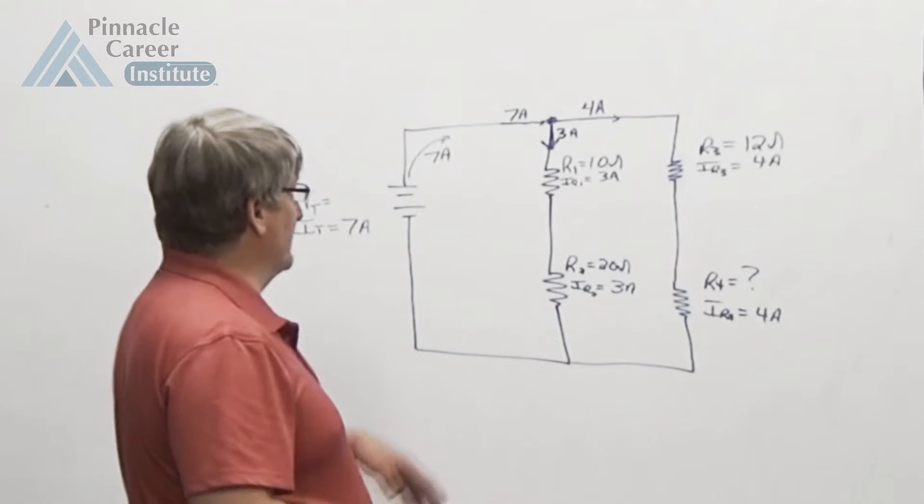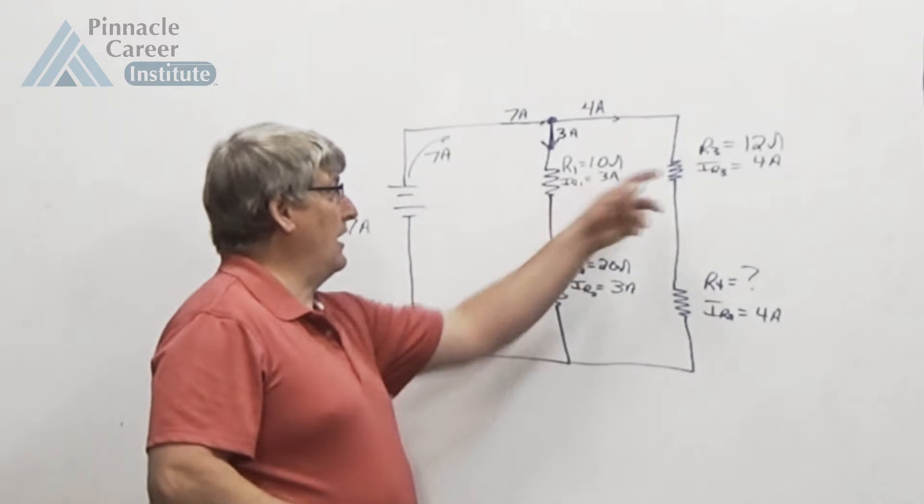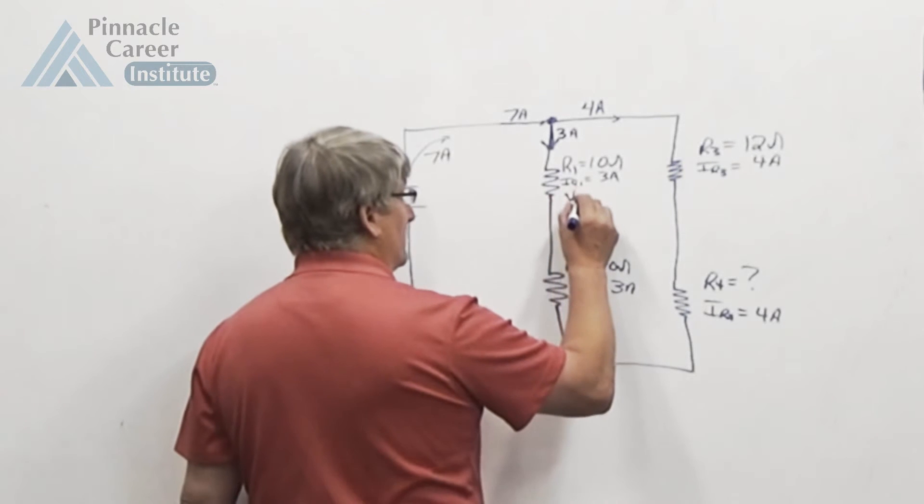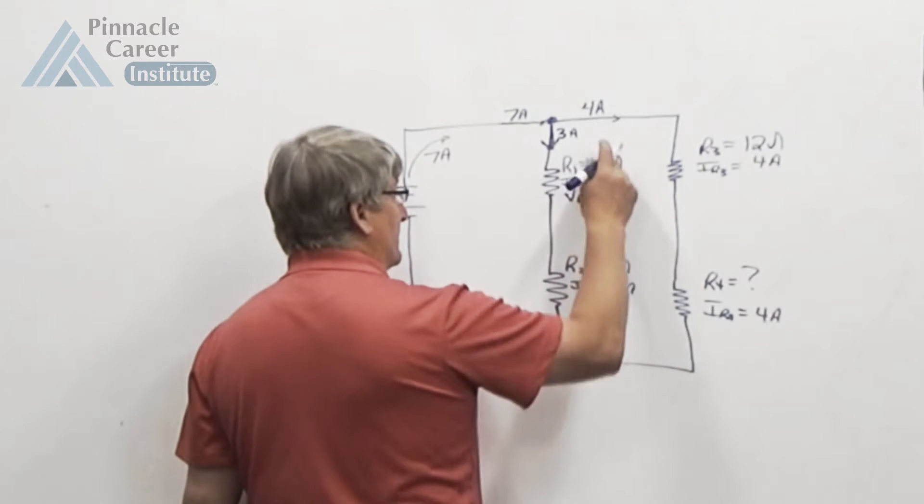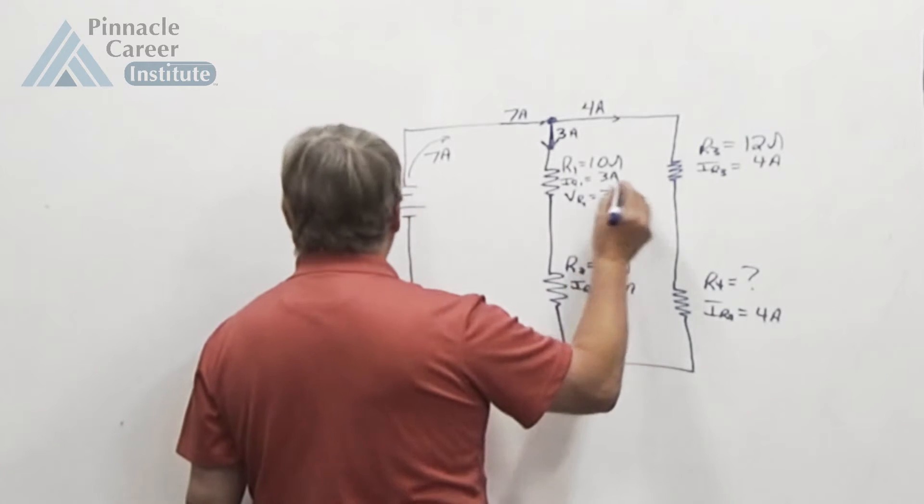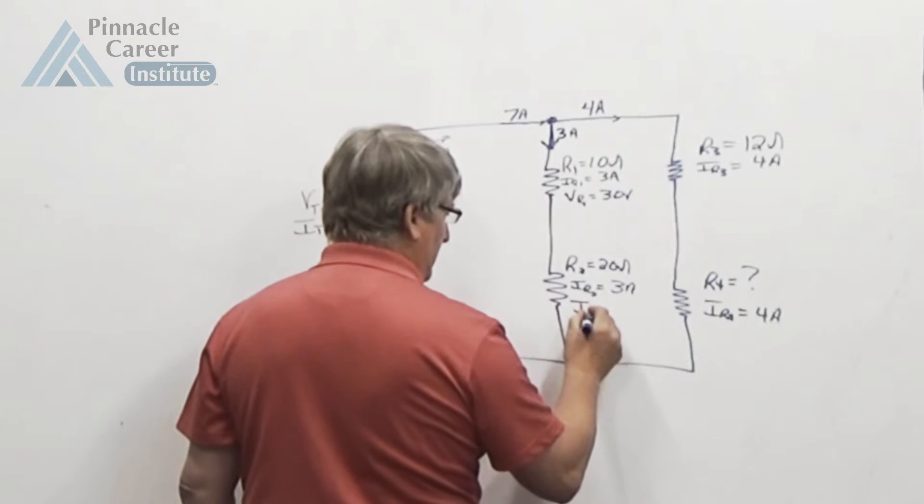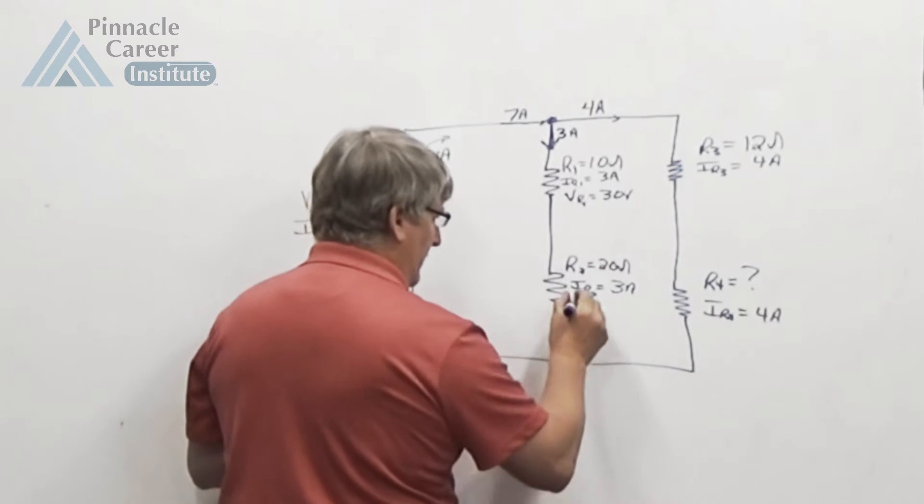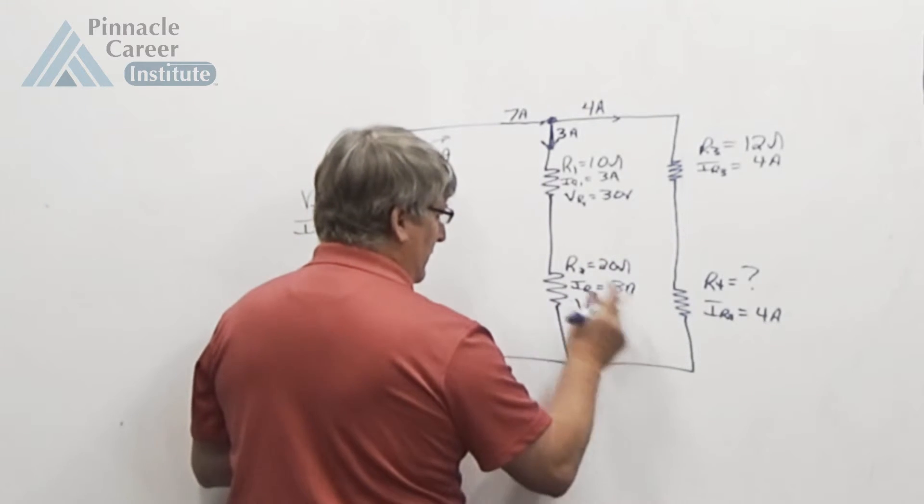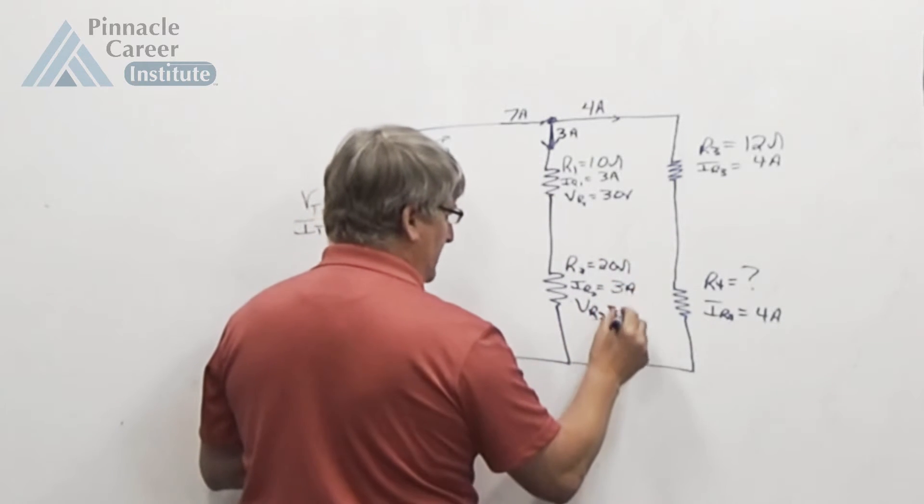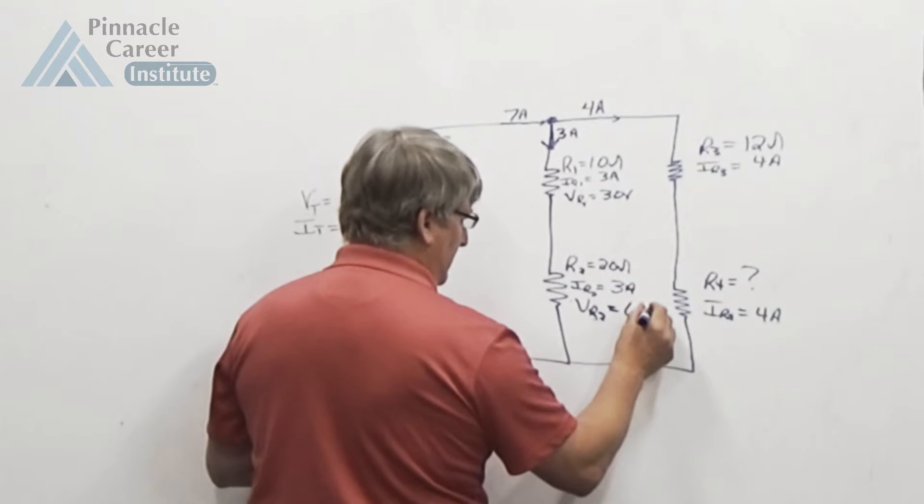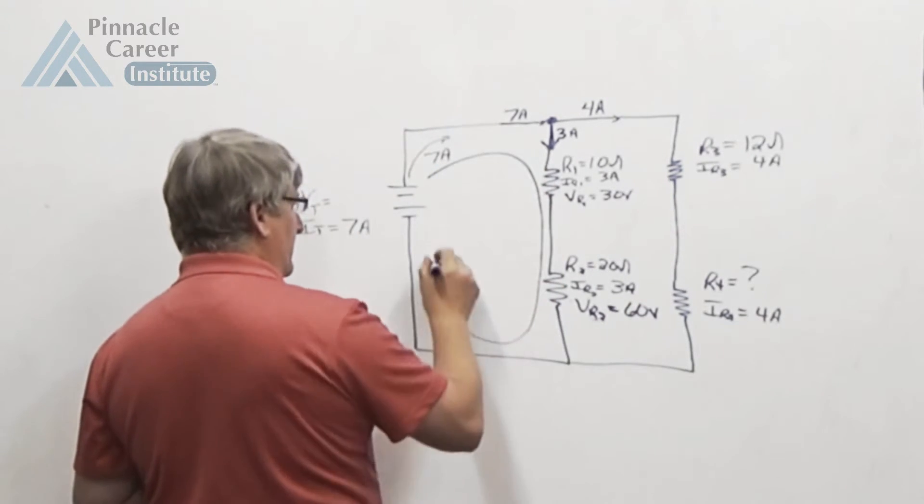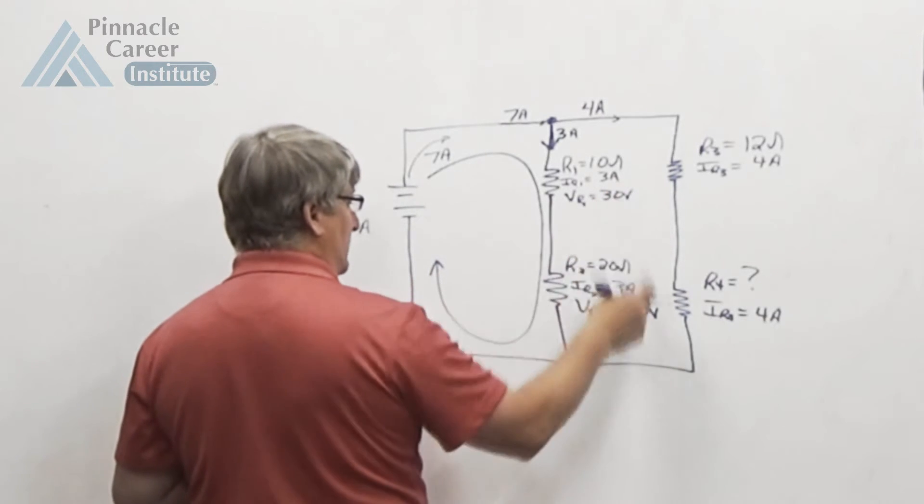So VR1 equals I times R, 3 times 10 is 30 volts. VR2 equals I times R, which is 3 times 20, 3 amps times 20 ohms is 60 volts, which means in this loop here I have 30 volts plus 60 volts.